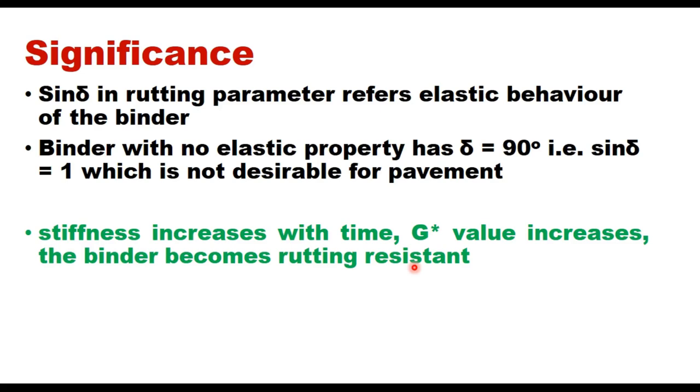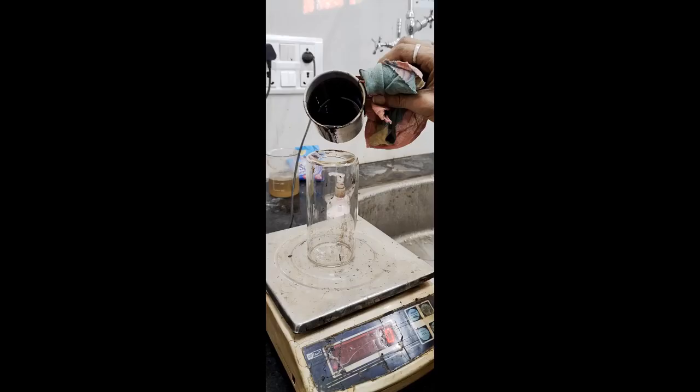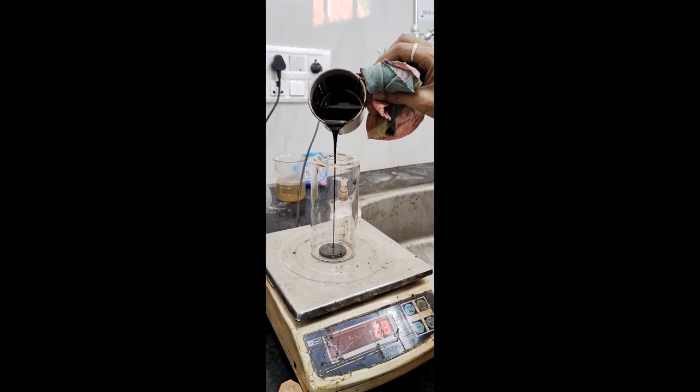This rolling thin film oven test is used to short-term age the binder. This test is used to measure the combined effect of heat and air on a film of bituminous binder.